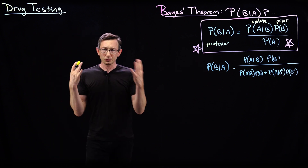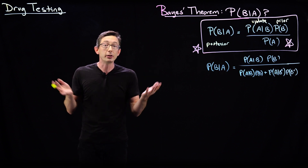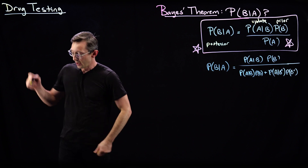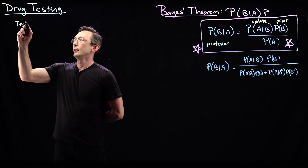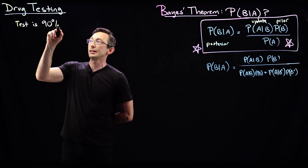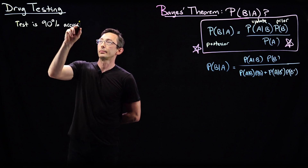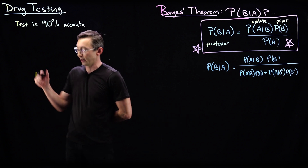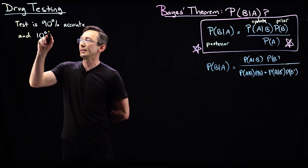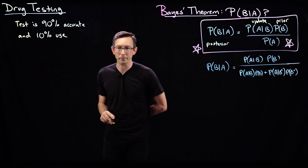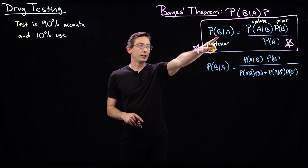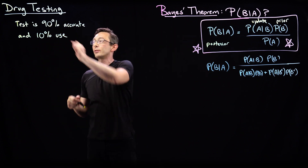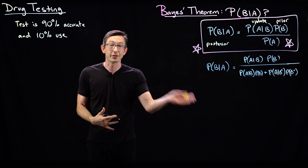So let's say you're testing for some illegal drug or narcotic — some drug you're screening for. Let's say your test is 90% accurate, and let's say that 10% of your population uses this drug, so you have a 10% user rate. I'm going to define probability of B as whether or not you used, and probability A as whether or not your test was positive or negative for that drug.